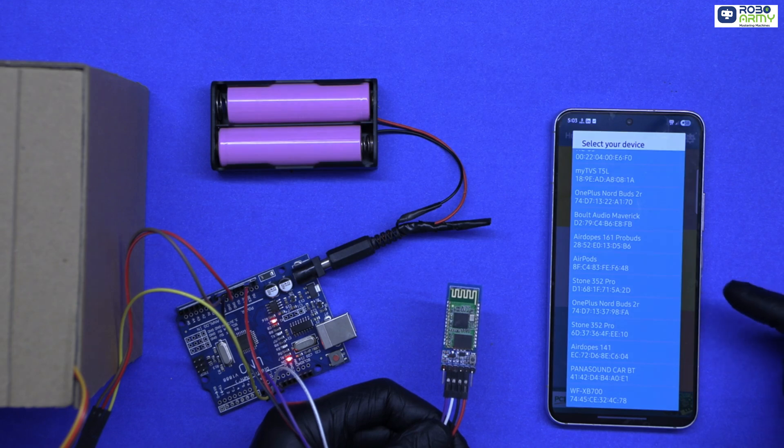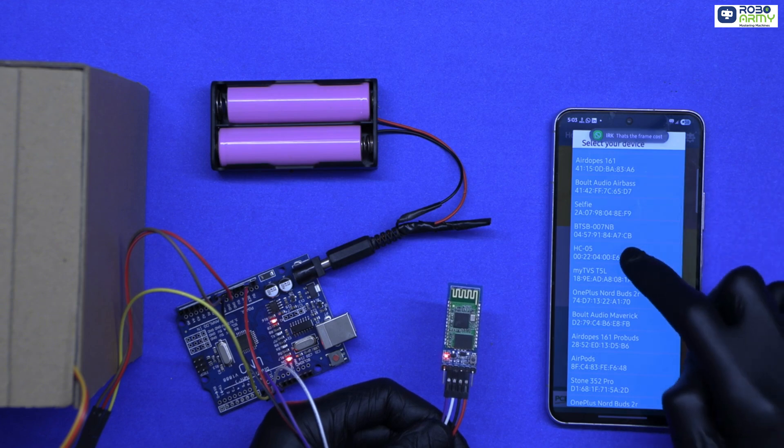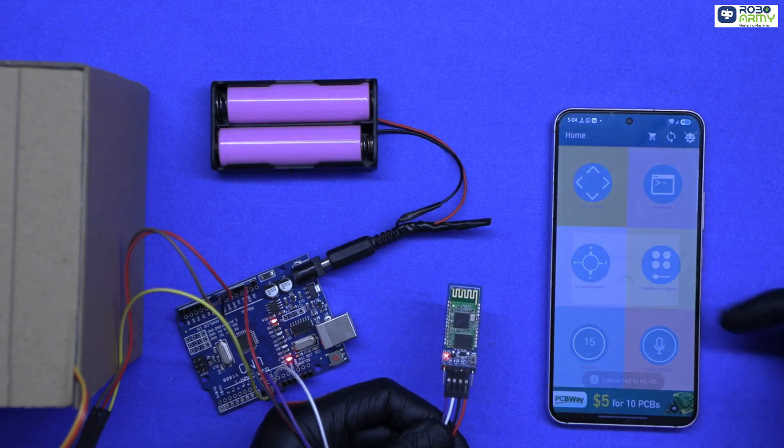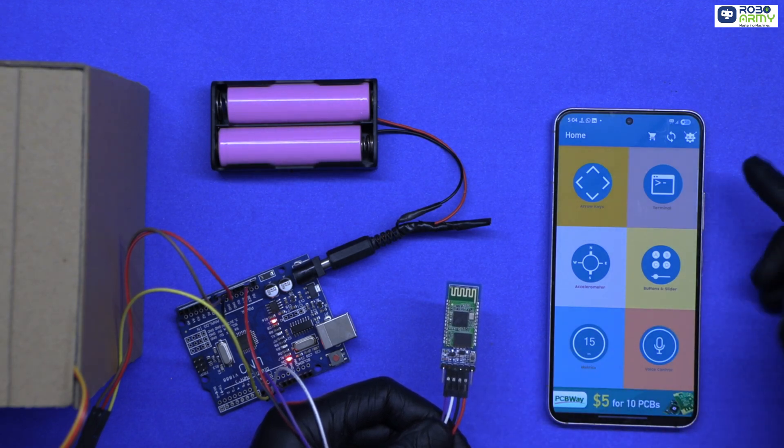Now, open the Bluetooth control app on your phone. Click on the connection option. You will see all paired devices. Select the HC05 module. The LED on the HC05 will stop blinking fast and begin blinking slowly. This means the connection is successful.